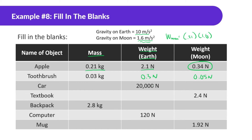A car has a weight of 20,000 newtons, which means its mass is going to be divided by 10: 2,000 kilograms. Then I'm going to take that 2,000 and multiply it by 1.6 to find the weight on the moon, which is going to be 3,200 newtons — a lot less than on Earth.